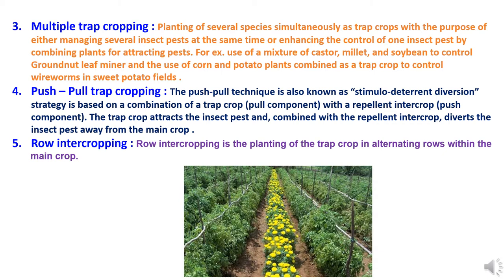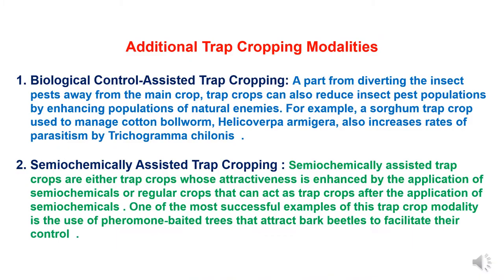Fifth is row intercropping, which is the planting of the trap crop in alternating rows within the main crop.